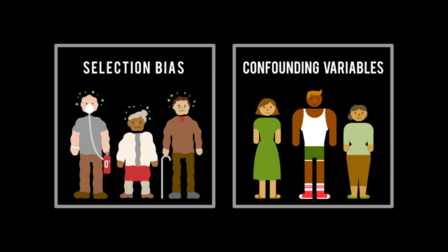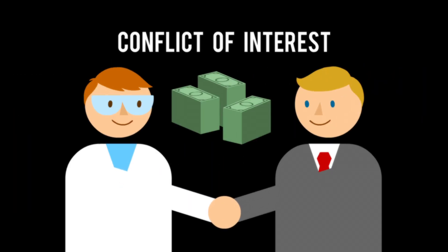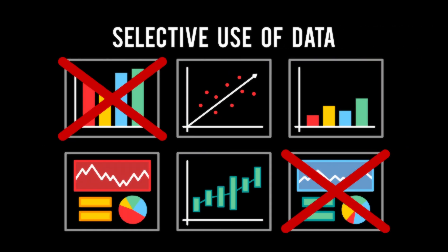These two major pitfalls, combined with more general dangers, such as conflicts of interest or selective use of data, can make the findings of any particular epidemiological study suspect, and a good study must go out of its way to prove that its authors have taken steps to eliminate these types of errors.